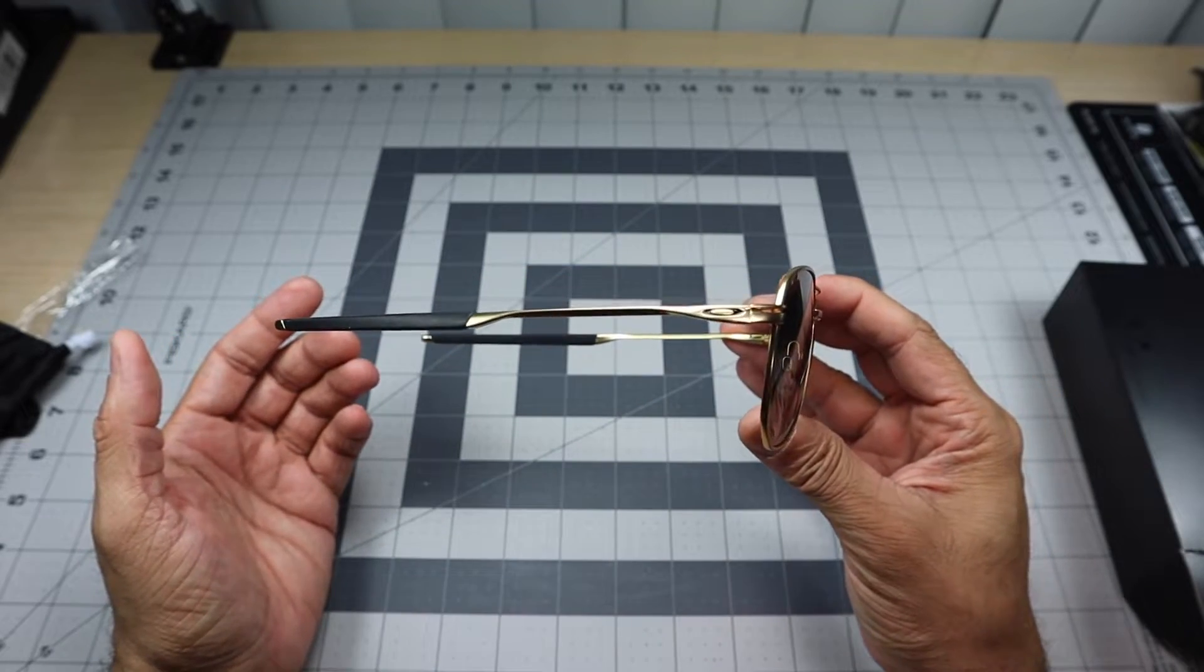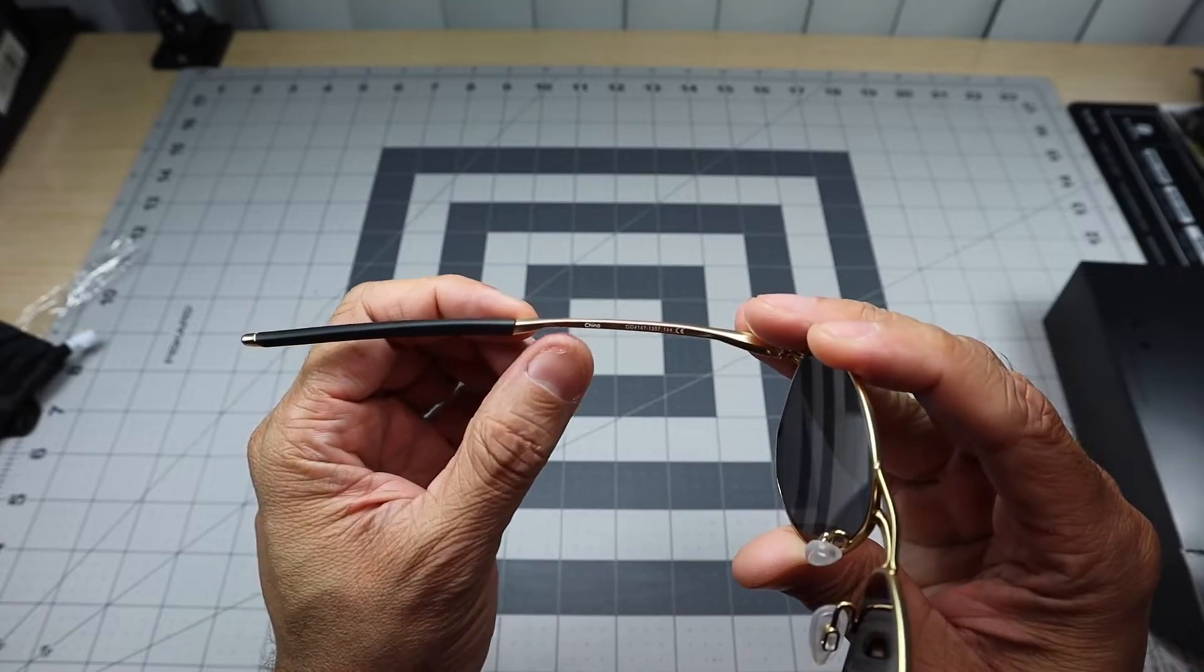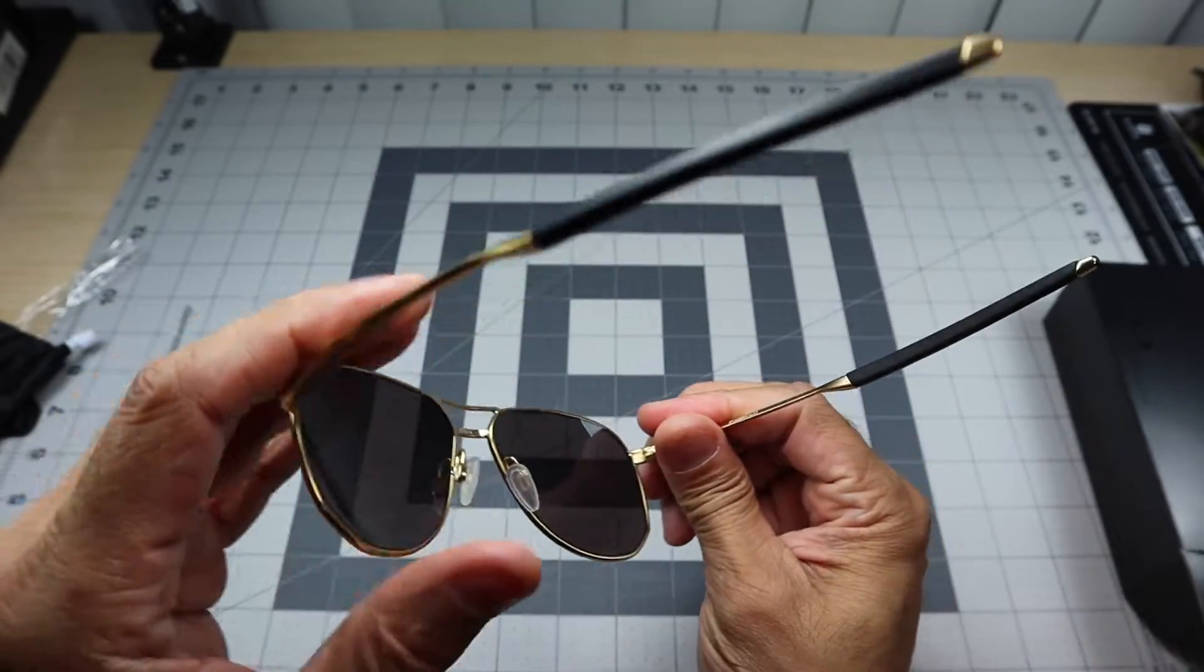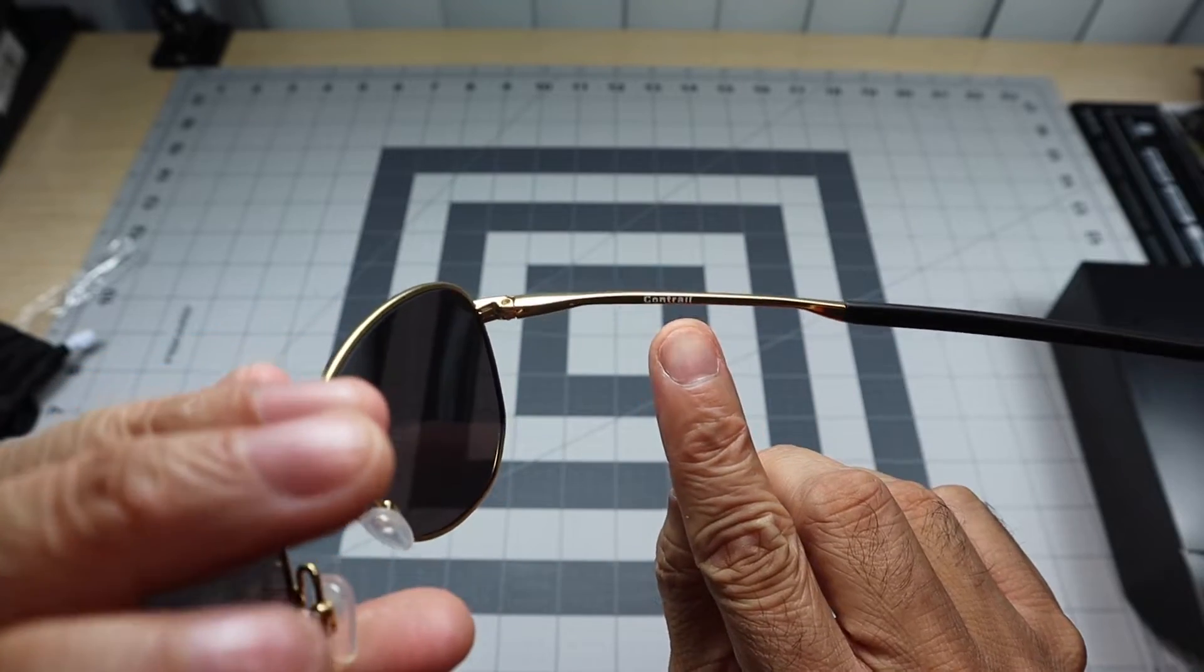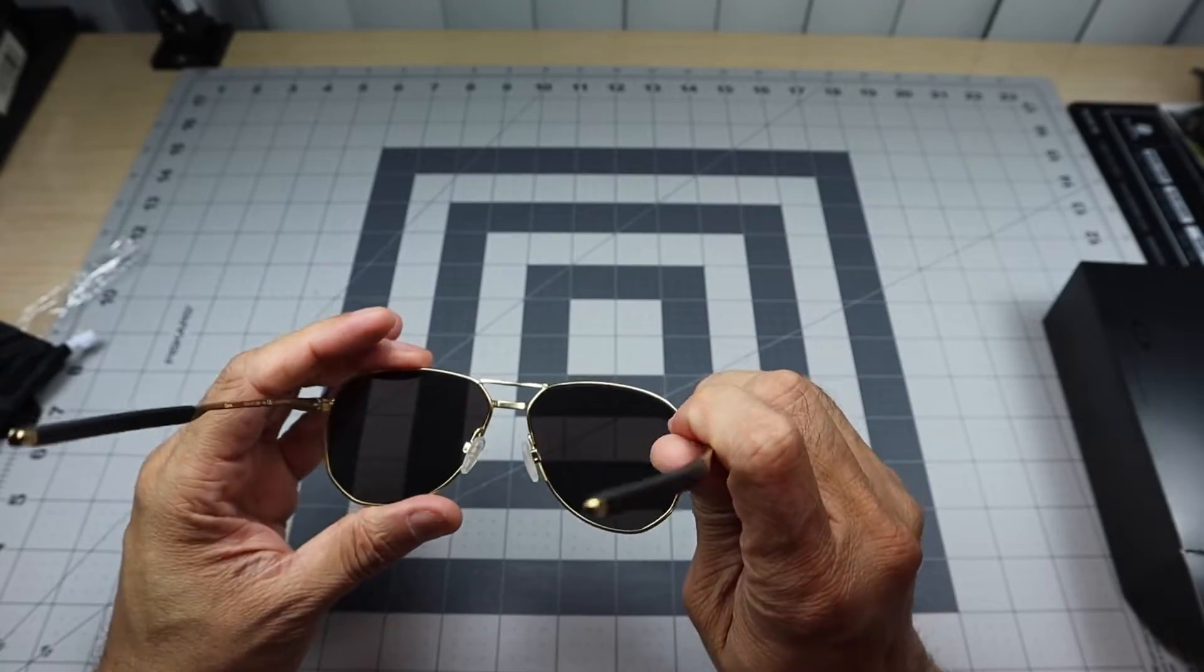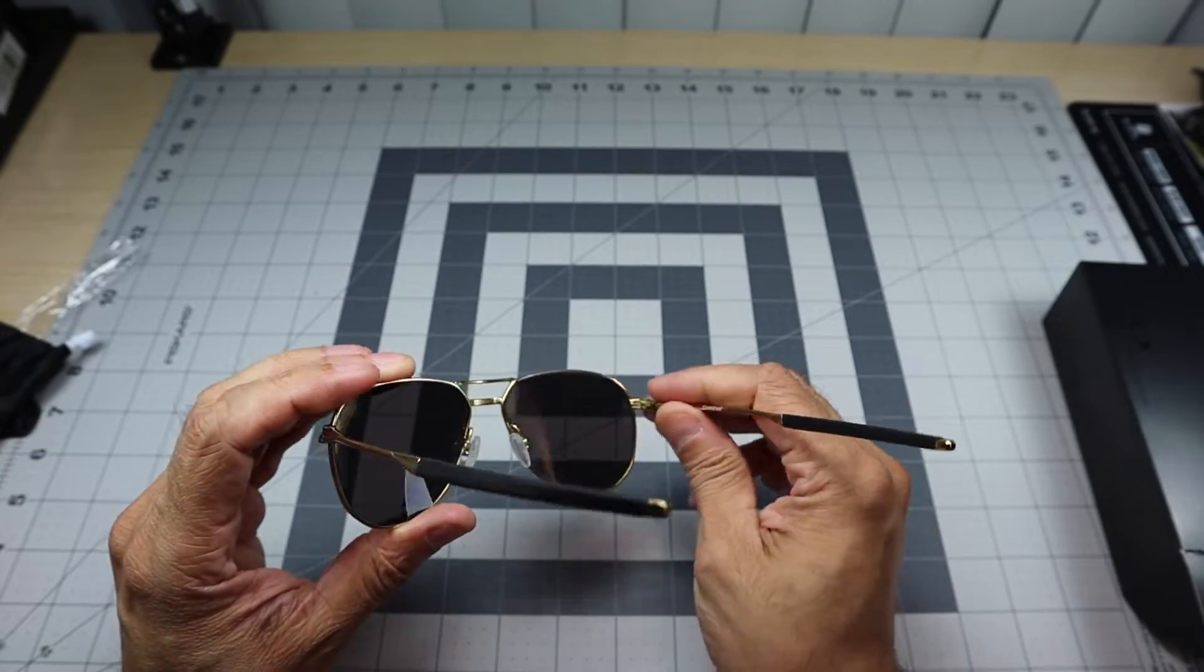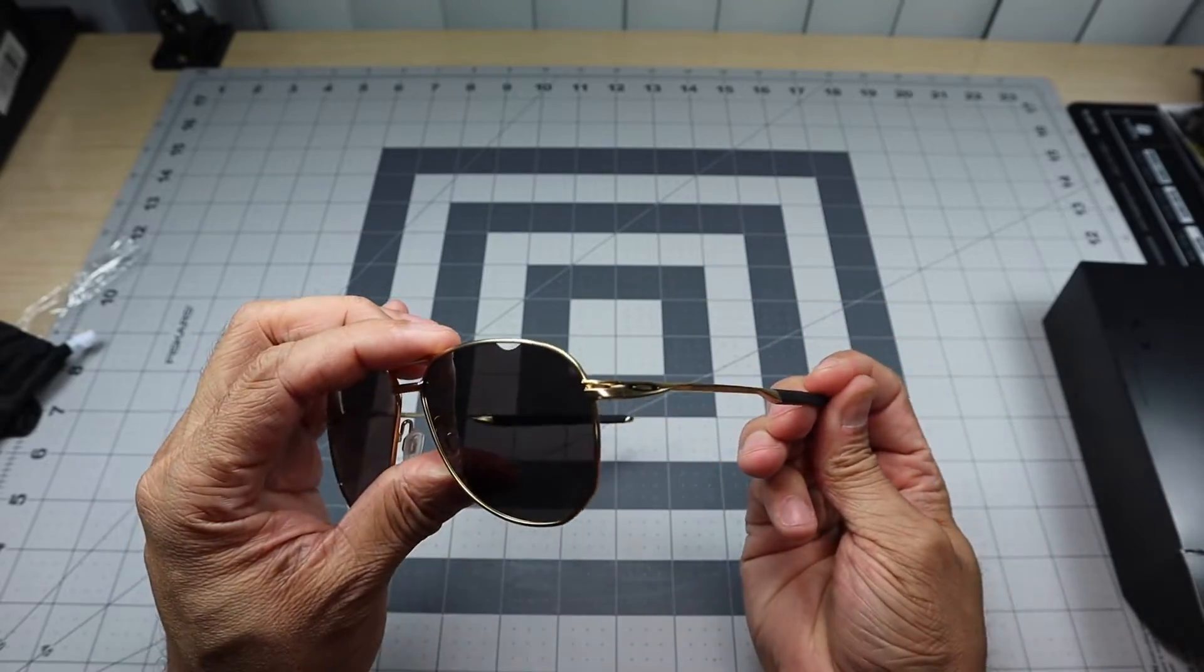Let me go ahead and, oh actually, before I do that, let me show you right inside here. You do have the model. Contrail, it's stamped right on the inside of the frame right there, so it does say contrail. So, let me go ahead and turn the camera around. I will put these on so you guys can see what they look like on me.